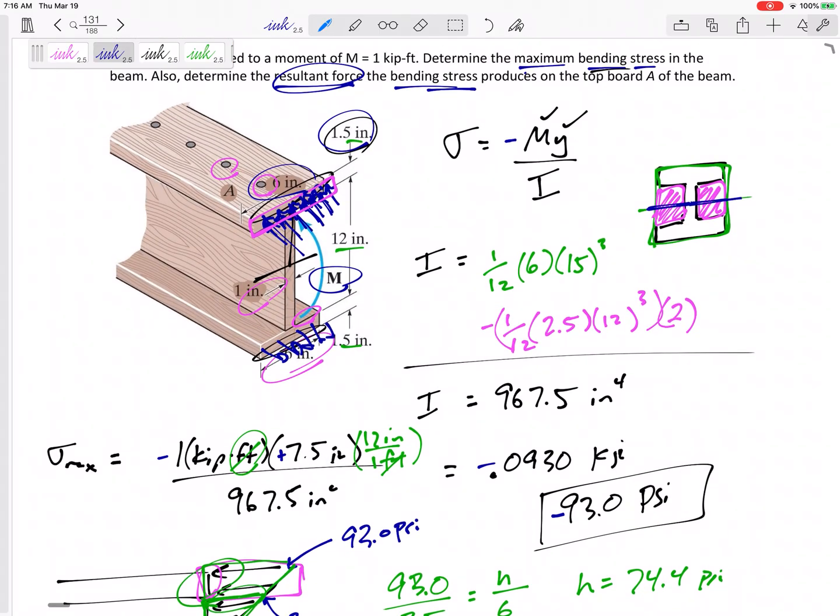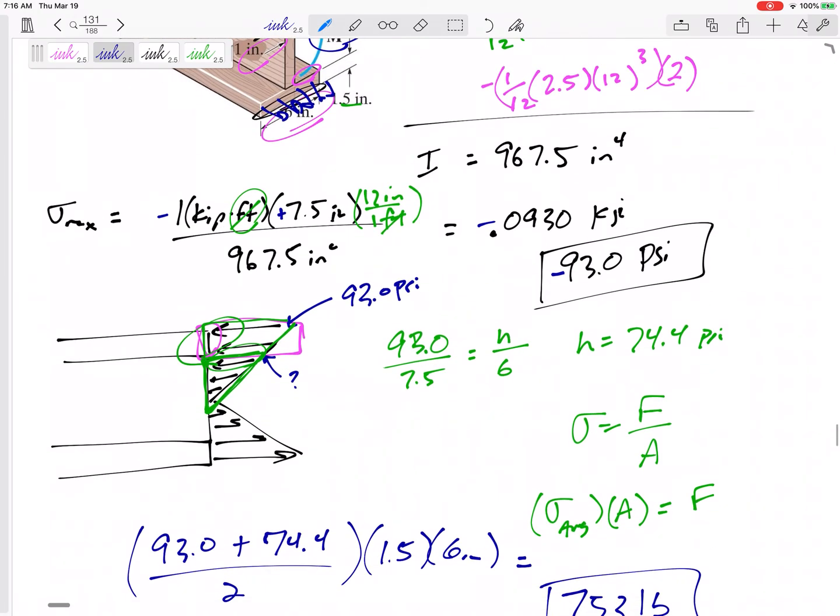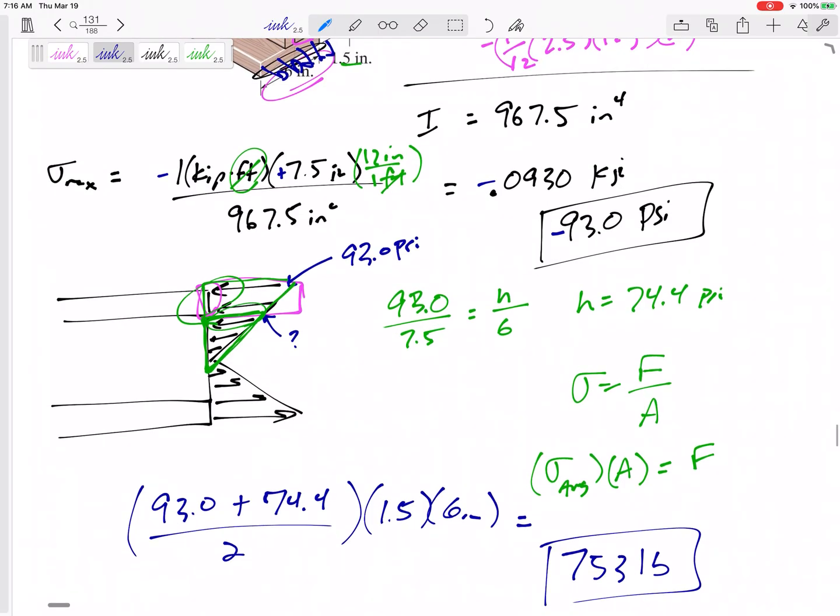Now take a step back and look at that. You know, MY over I. So if we want to find the stress at one point, for instance, a maximum stress at the very top, we could do MY over I. But if we want to find the equivalent force due to the stress, then we need to look at that stress as a distributed load and multiply it times the area that it is acting. Right?